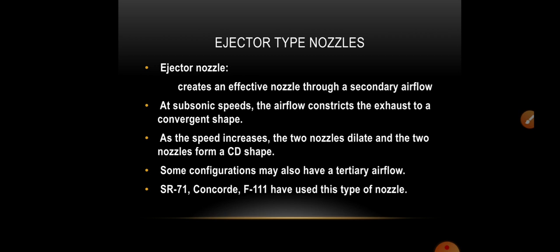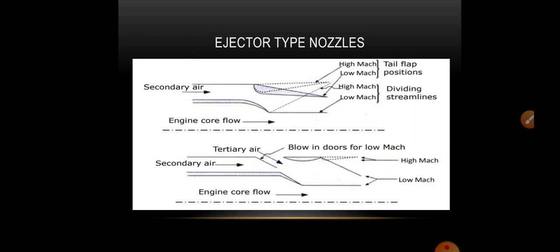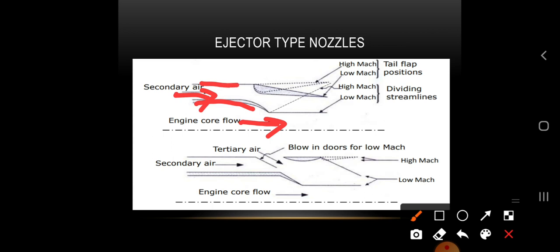SR-71 and F-111 have used these types of nozzles. The engine core flow is considered primary flow, while airflow from other sources is considered secondary flow. There is a primary nozzle and then a secondary nozzle.